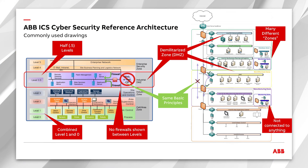Our reference architecture cannot be the only one — there are many others out there, from ISA 99 to the Purdue model. But many of these all share the same basic principles: restricting that communication flow between untrusted networks and our trusted areas. You may see various differences, but ABB's reference architecture is built with practicality in mind — it can be directly mapped to network drawings, there are no unconnected networks, and there will be firewalls shown between each zone.